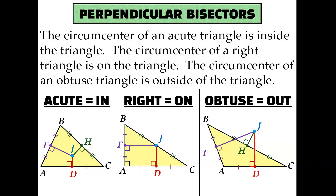Keep that in mind if you're ever asked to draw the perpendicular bisectors of a triangle. You should start by finding the midpoints and then draw a segment that's perpendicular to that side. But keep in mind you might have to go through the triangle or even outside of it in order to make all the perpendicular bisectors intersect.